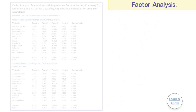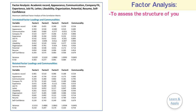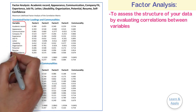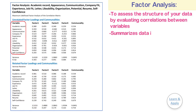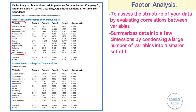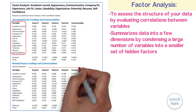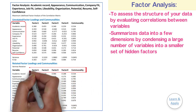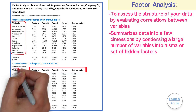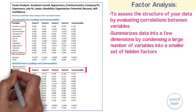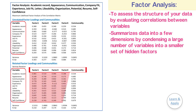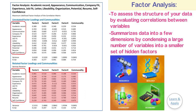Factor analysis is used to assess the structure of your data by evaluating the correlations between variables. It summarizes data into a few dimensions by considering a large number of variables into a smaller set of hidden factors that you do not directly measure or observe, but which may be easier to interpret. Using this analysis, you can model each original variable as a linear function of these basic factors. Factor analysis is commonly used in the social sciences, market research, and other industries that use large datasets.